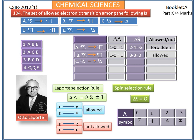Next, option C: singlet Δ to singlet Δ. Here delta lambda = 0 and delta S = 0, so it is an allowed transition. Option D: doublet Π to doublet Π. Here also delta lambda = 0 and delta S = 0, so it is also an allowed transition.